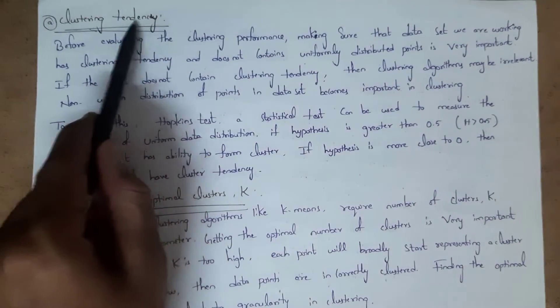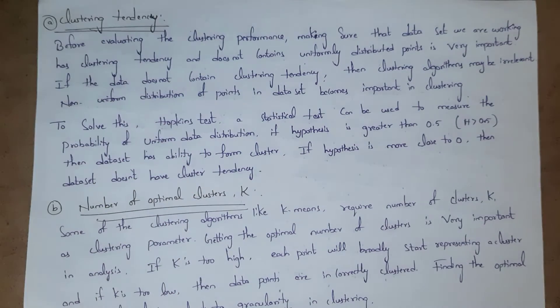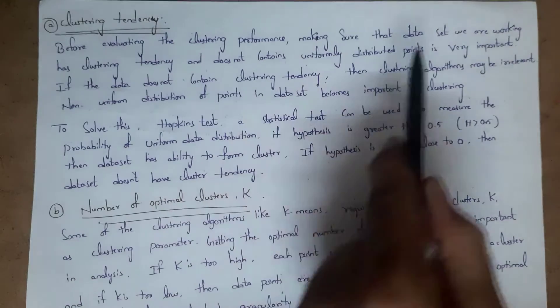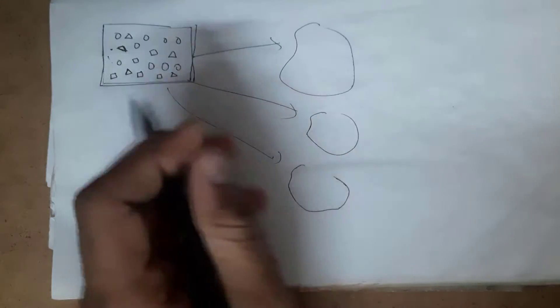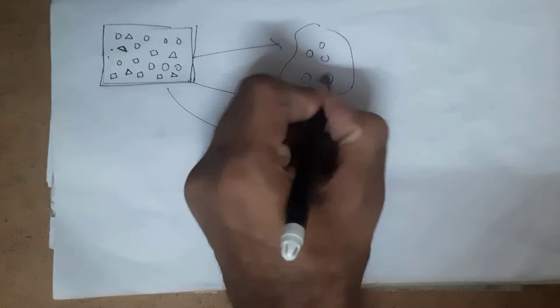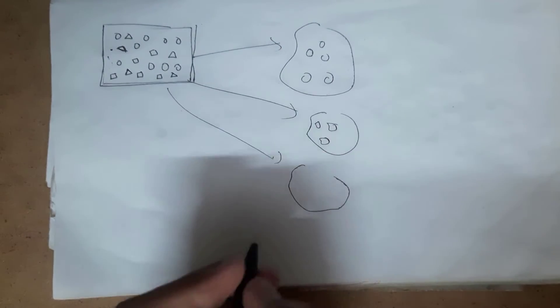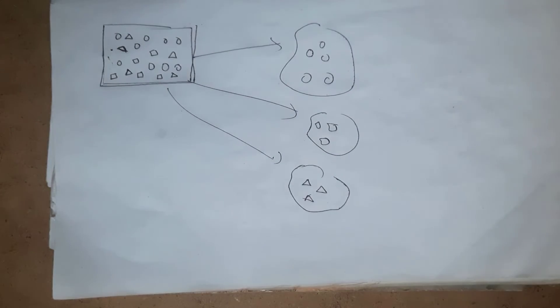The first one is clustering tendency — we can also call this tendency as capability. Before checking the performance of our clustering algorithm, we first need to make sure that the dataset we are working with has clustering tendency or not. If this dataset has the tendency to form a cluster, then it will uniformly distribute data objects — it will correctly place objects in the cluster. For example, it will create three clusters: circular objects in one cluster, square objects in another, and triangular objects in another.